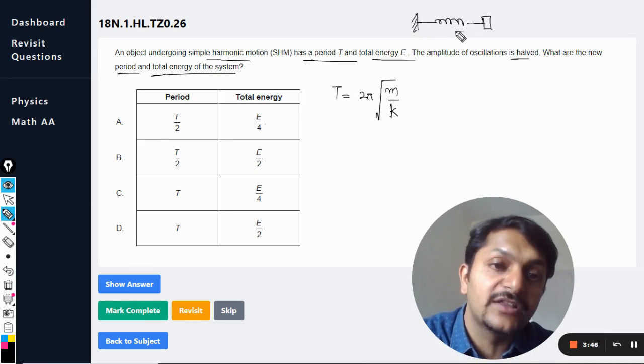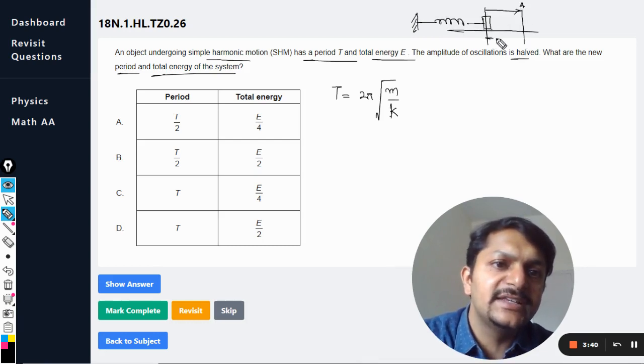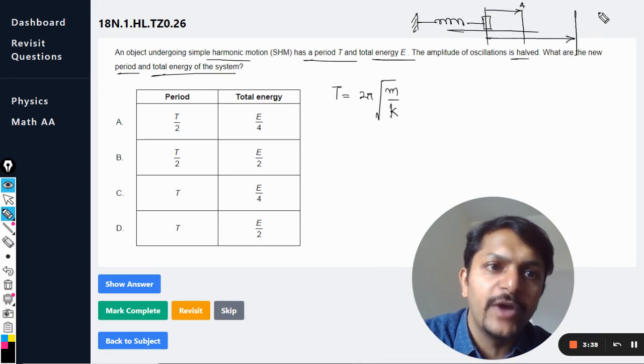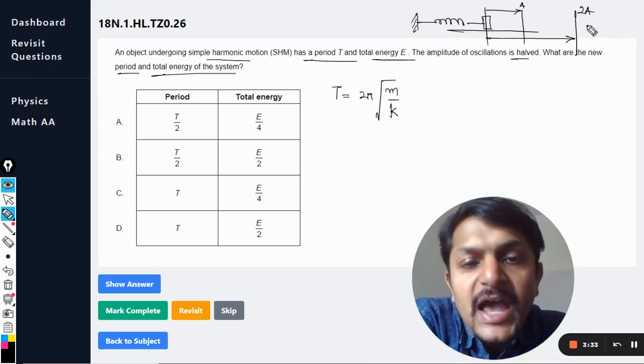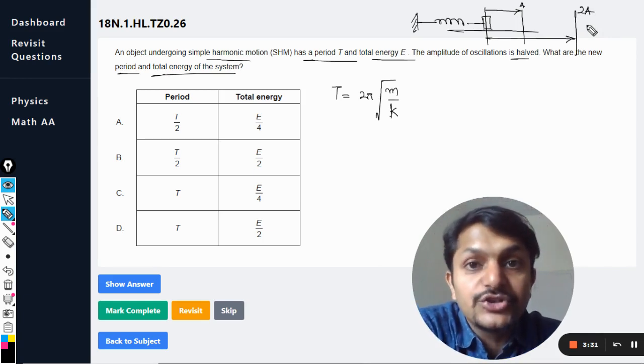Like it seems to be changing because now the bodies are moving at a farther distance, isn't it? Earlier the amplitude was up to this only, and let us say in the second case the amplitude is this much far away, the amplitude is double.